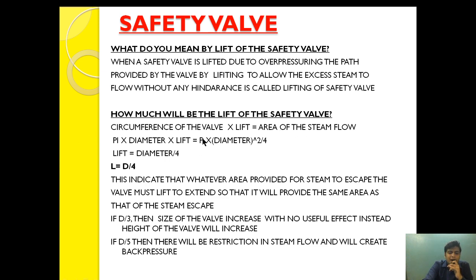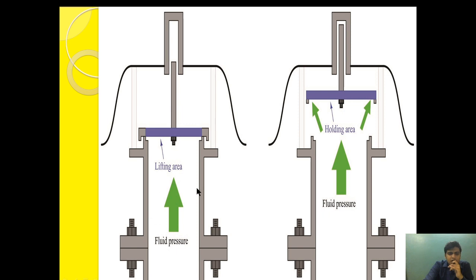The area of the steam flow is πr², which in diameter form is πd²/4. So we have 2πr × L = πr². Cancelling π from both sides and simplifying, we get: L = d/4. So lift L equals diameter divided by 4, or equivalently radius divided by 2.